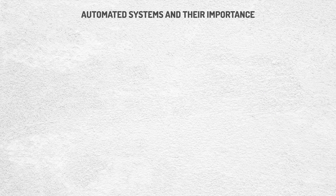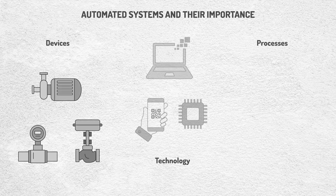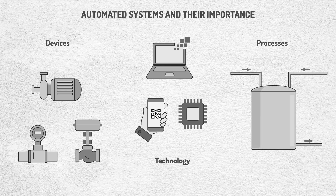Industrial automation consists of the use of software and hardware systems to control machines and industrial processes. Its main goal is to optimize operations, increase efficiency, and reduce errors, making it a key part of modern industry.